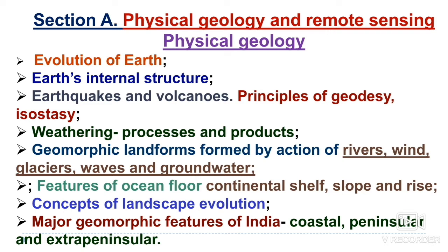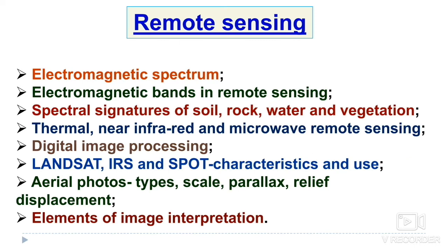Next is remote sensing. The electromagnetic spectrum (EMS) is very important. Electromagnetic bands in remote sensing are also very important — what bands are generally used, like the visible light band, infrared radiation, radio waves, and gamma rays. Questions have been asked from this in previous exams. The spectral signature of soil, rock, water, and vegetation in thermal, near-infrared, and microwave remote sensing is also important.